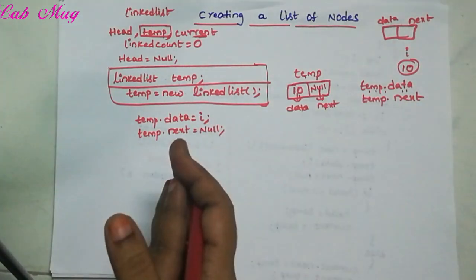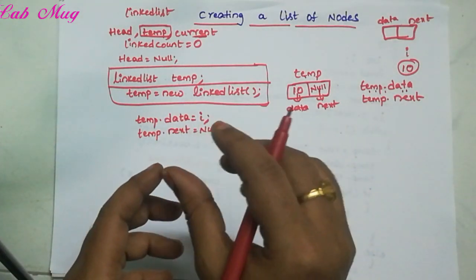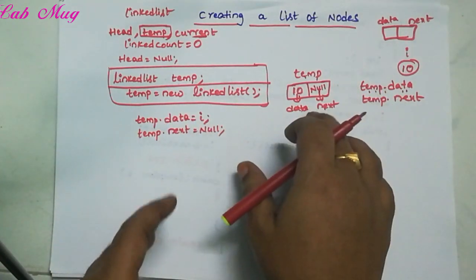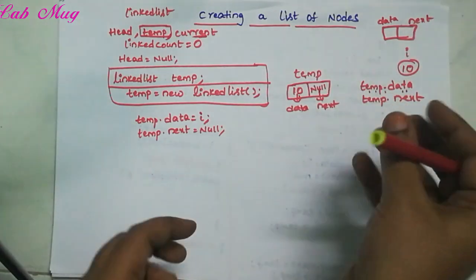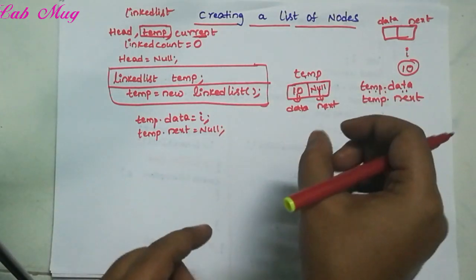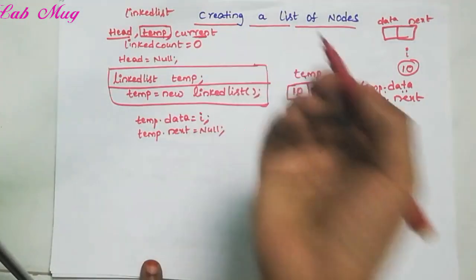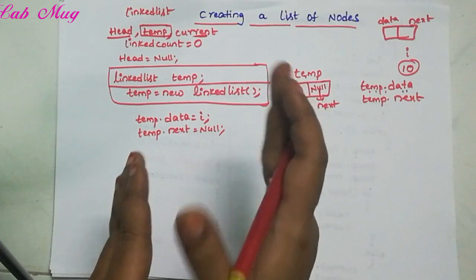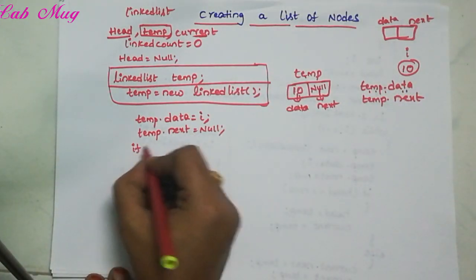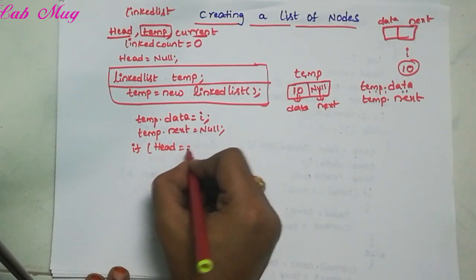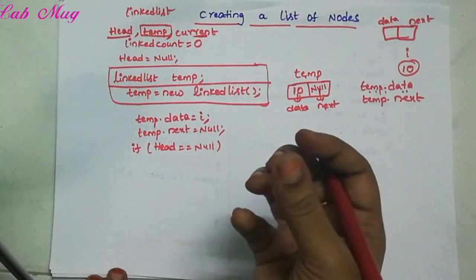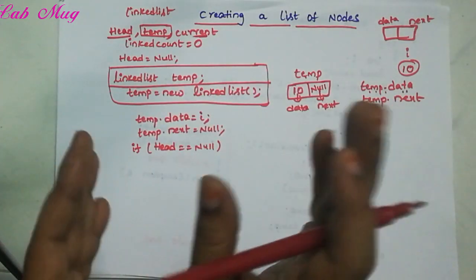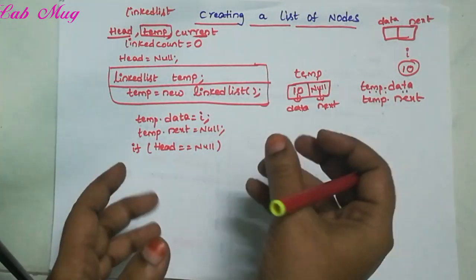When we create a node, we check whether it is the first node, a middle node, or the last node — this is based on the head pointer. So if we create a node and set values, we check: if head equals null, that means no nodes exist yet and this is the first node. We place the new node's address into head.